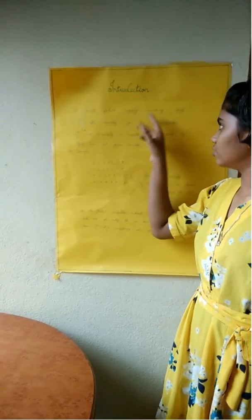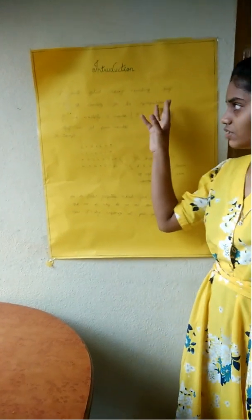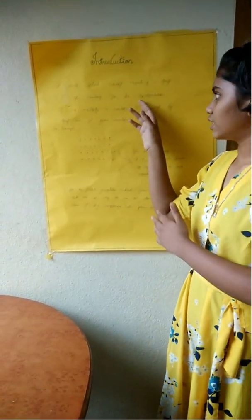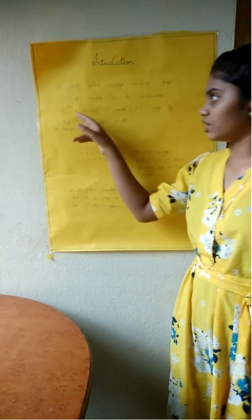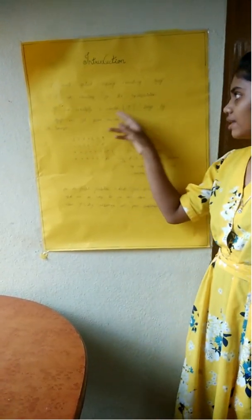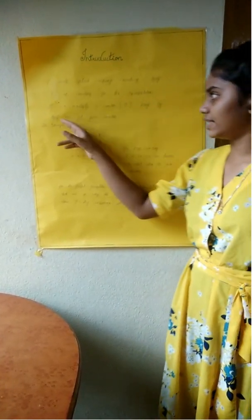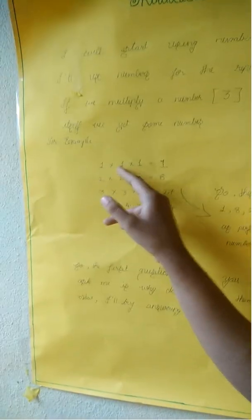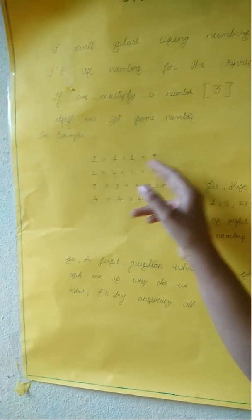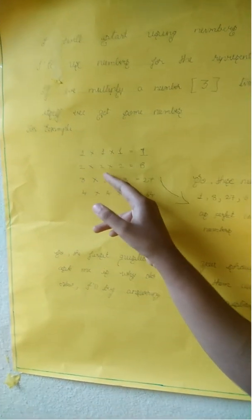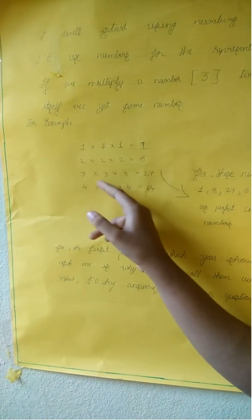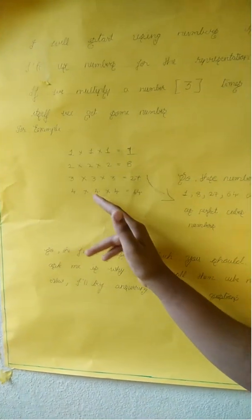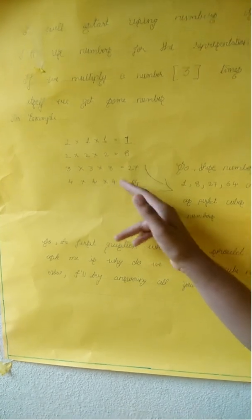I will start using numbers for representation. If we multiply a number 3 times by itself we get certain numbers. For example, 1 into 1 into 1 is equal to 1, 2 into 2 into 2 is equal to 8, 3 into 3 into 3 is equal to 27, and 4 into 4 into 4 is equal to 64.